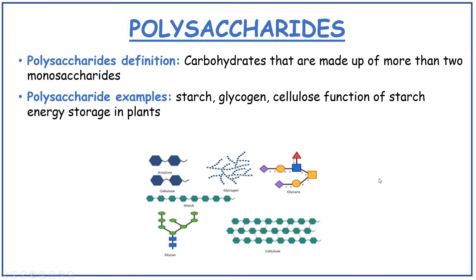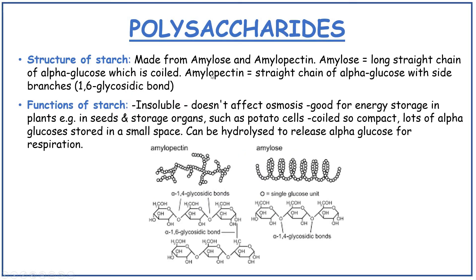Polysaccharides: carbohydrates that are made up of more than two monosaccharides. Some examples are starch, glycogen, and cellulose. The function of starch is energy storage in plants. The structure of starch is made from amylose and amylopectin. Amylose is a long straight chain of alpha glucose which is coiled. Amylopectin is a straight chain of alpha glucose with side branches of 1,6 glycosidic bonds. Starch is insoluble, it doesn't affect osmosis, and it's good for energy storage in plants like seeds and potato cells. It is coiled so it's compact, with lots of alpha glucoses stored in a small space. It can be hydrolysed to release alpha glucose for respiration.